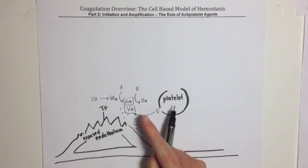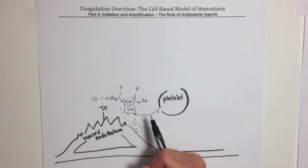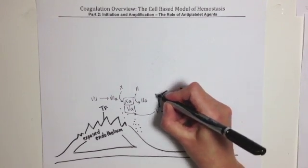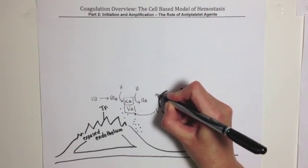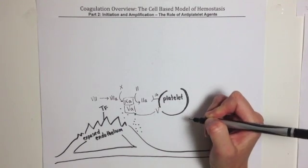The generation of the small amount of thrombin is the end of initiation. The second step of the cell-based model is amplification. In amplification, thrombin activates the machinery for the production of exponential quantities of thrombin.